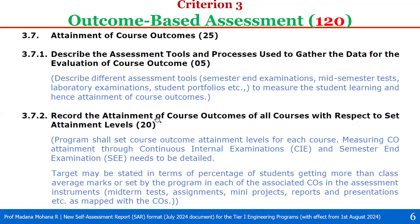Then 3.7.2, record the attainments of course outcomes of all courses with respect to set attainment levels, which carries 20 weightage. Here we have to provide, for whatever program you are seeking accreditation, the set course outcome attainment levels for each course. Measuring course outcome attainment is done through continuous internal evaluation and semester-end examination. The target may be stated in terms of percentage of students getting more than the class average of marks, set by the program for each of the associated COs in the assessment instrument with respect to mid-term tests, assignments, mini-projects, reports, presentations, etc., as mapped with COs.